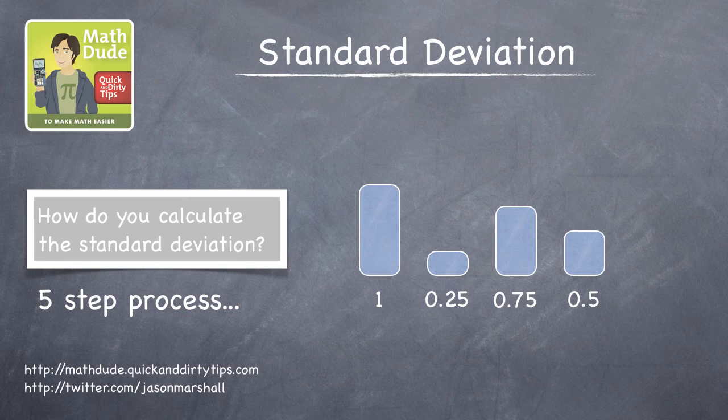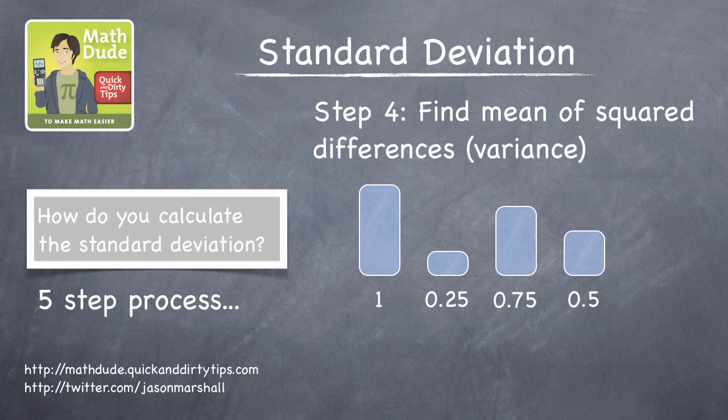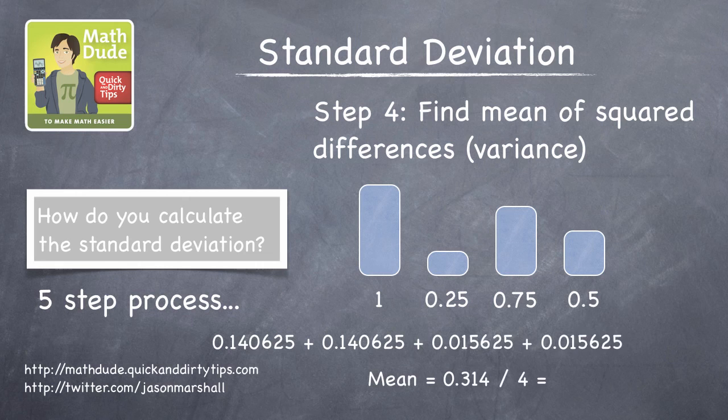Okay, step four is to find the mean of these squared differences. This value, 0.0785 in this case, is also known as the variance.